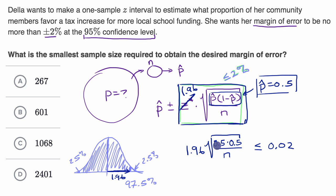Now we just have to do a little bit of algebra to calculate this. We could divide both sides by 1.96.